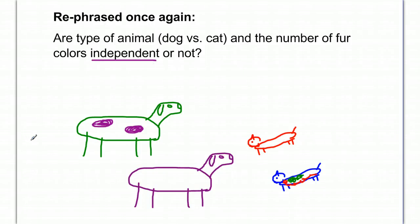And now when you think of independence, you might think of things like two coin flips. One coin flip does not affect the next coin flip, so that means they are independent of each other. They have no influence on each other. So what we want to know is does type of animal and number of colors in the fur coat affect each other? Are they linked or related in some way, or are they totally independent?